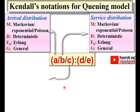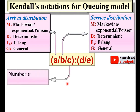Next, C represents the number of servers. It can be one, two, three, four, five, etc. For example, if C is equal to one, that represents one service facility. So C represents the number of servers.